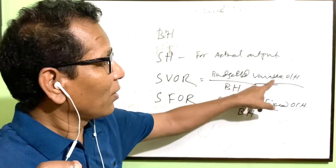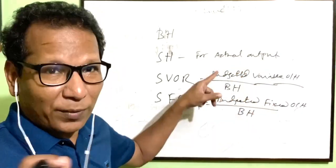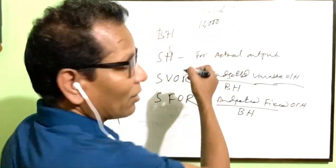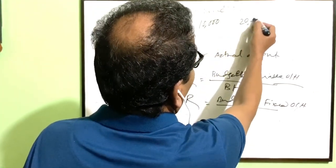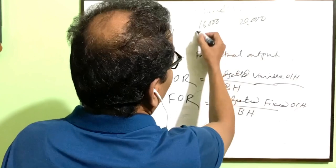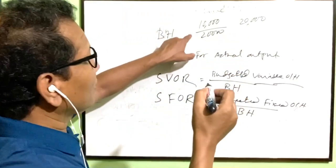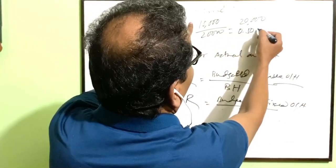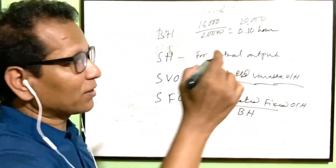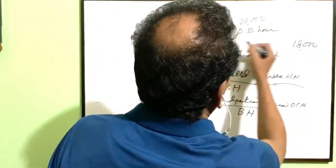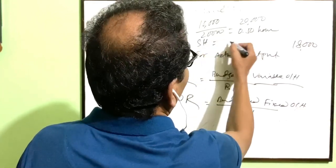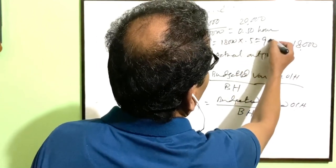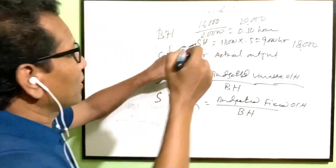Budgeted variable overhead and budgeted fixed overhead will be given. For example, if budgeted hour is 10,000 and production is 20,000 units, then for 20,000 units the standard hour per unit is 0.5 hour. If actual production is 18,000 units, then standard hour is 18,000 multiplied by 0.5 hour, which equals 9,000 hours. This is the standard hour.